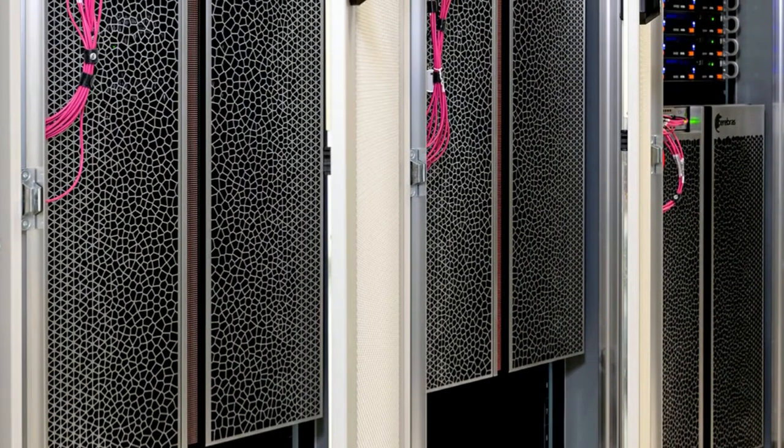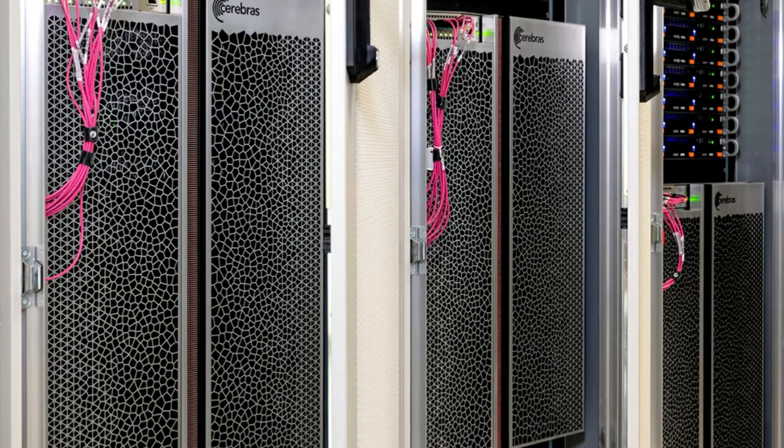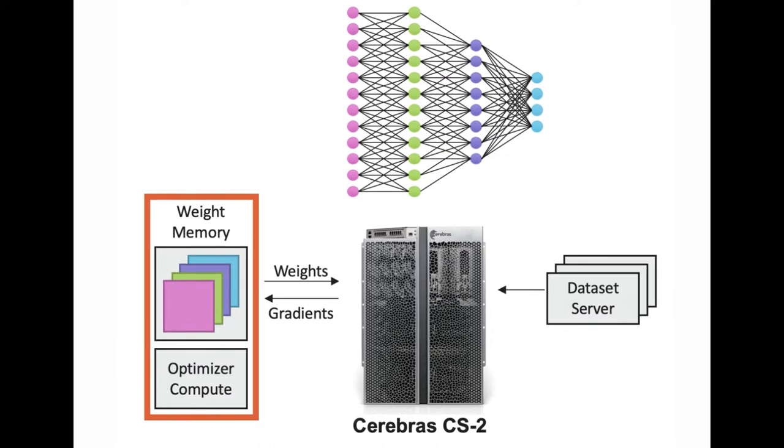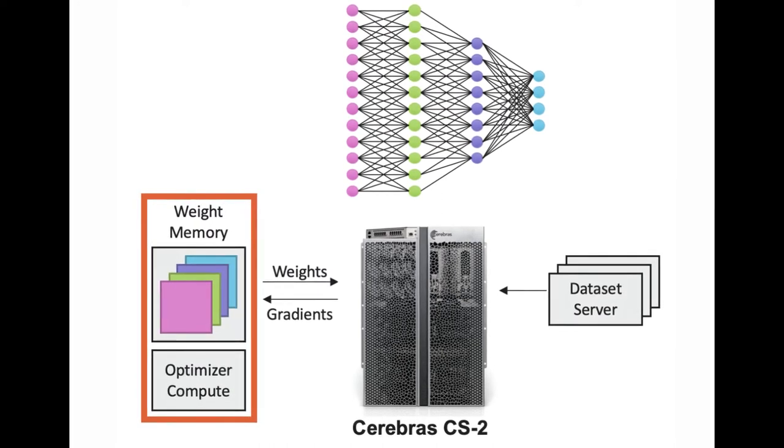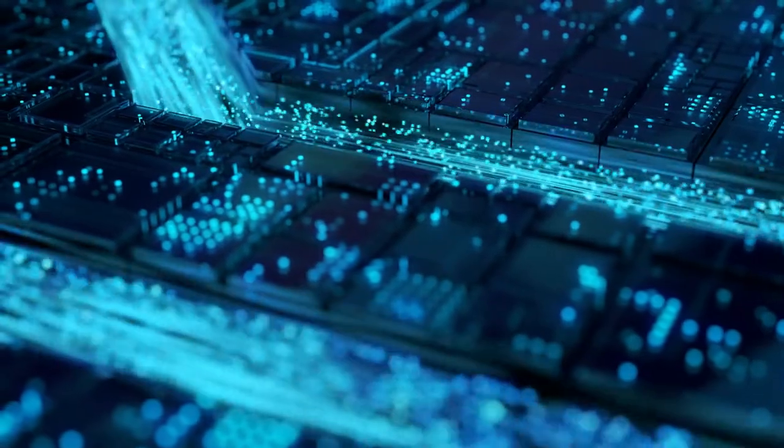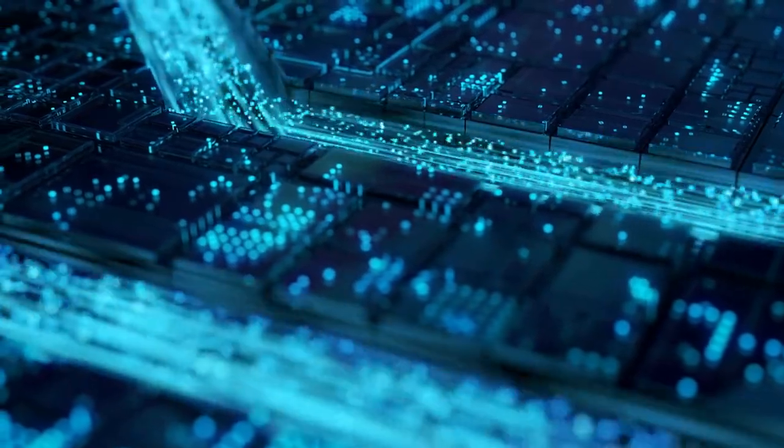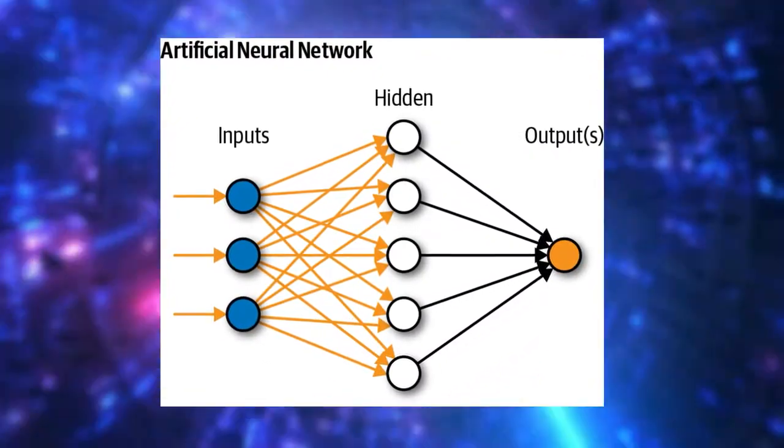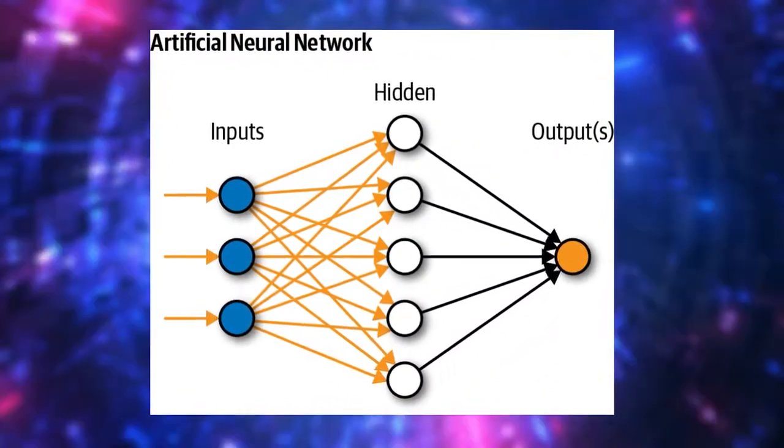The Cerebrus system of artificial intelligence uses a neural network to learn. This neural network is similar to the human brain in that it has many interlinked nodes that work together to process and store information. However, unlike the human brain, artificial neural networks are designed to accept input data and process it rather than generate new output. The Cerebrus system is a series of interconnected artificial neural networks designed to learn.